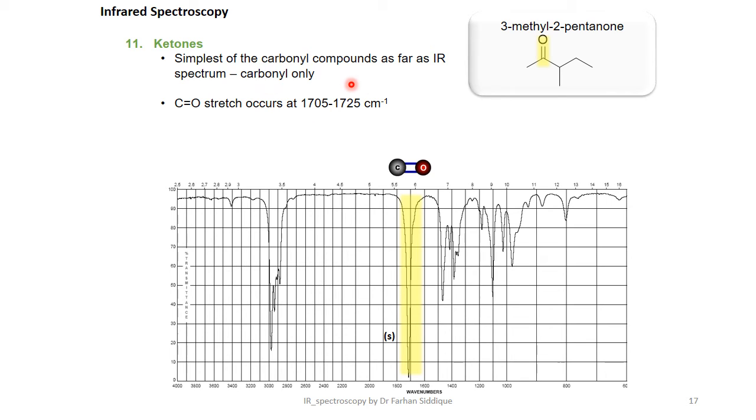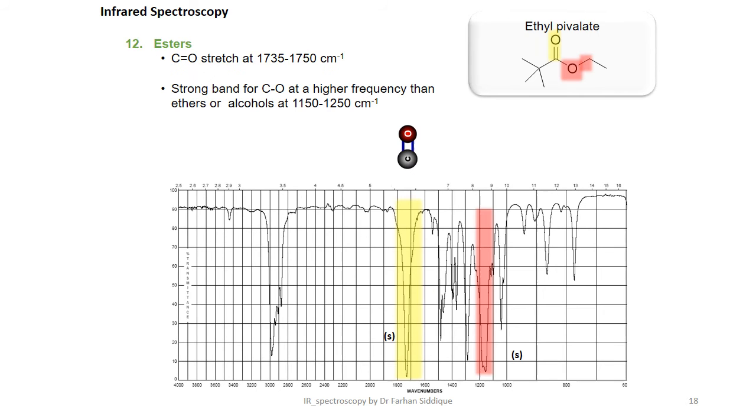Ketones show the simplest carbonyl compound as far as IR spectrum, carbonyl only. Esters also show stretch between 1735 to 1750 for C=O.